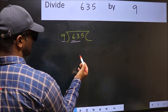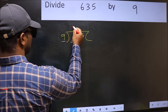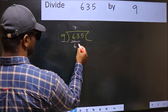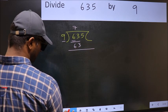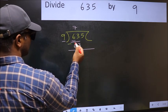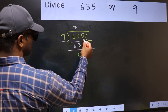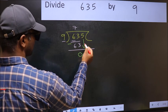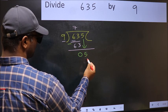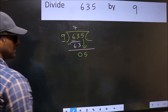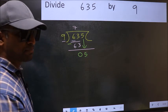Now subtract 63 minus 63, which equals 0. After this, bring down the beside number, so bring 5 down. After this step, the mistake happens.